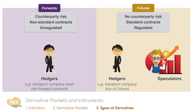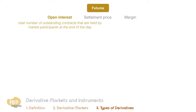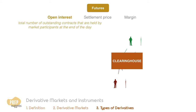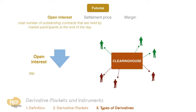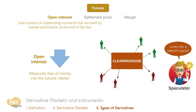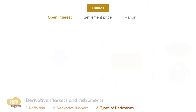Besides these differences, there are three terms that apply only to futures: open interest, settlement price, and margin. The open interest of any particular futures contract is the total number of outstanding contracts held by market participants at the end of the day. Open interest increases when traders enter new long and short positions and decreases when traders exit existing positions. Open interest is therefore a measure of the flow of money into the futures market. Some speculators look for trading signals based on the open interest for a particular asset.